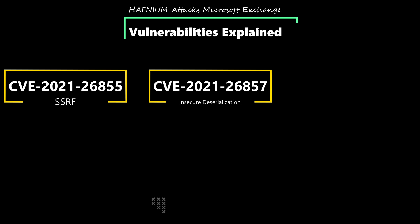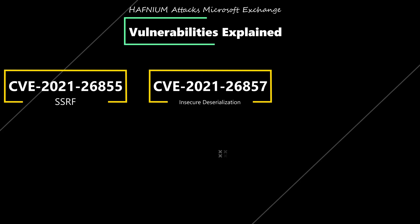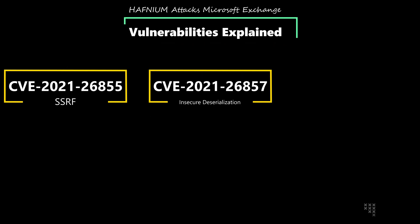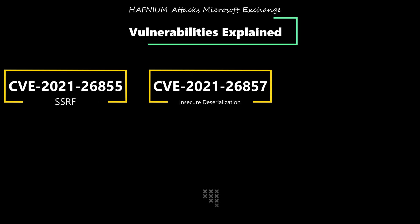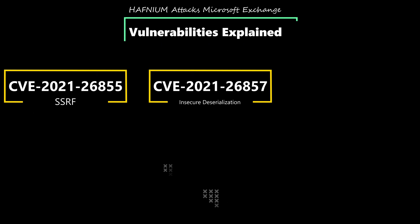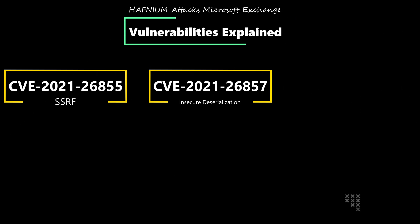CVE-2021-26857 is an insecure deserialization vulnerability in the unified messaging service. An attacker can use this vulnerability to run any code as system, and would require administrative privileges to perform this exploit.